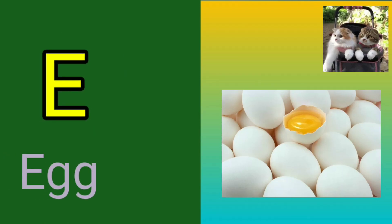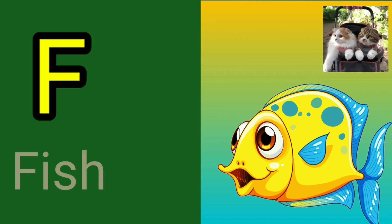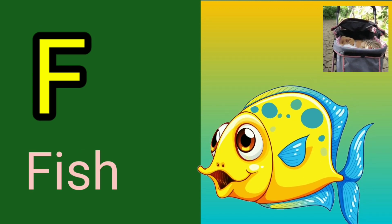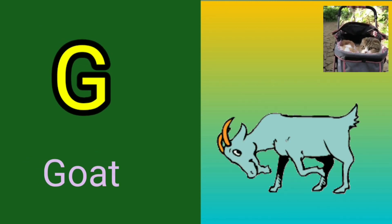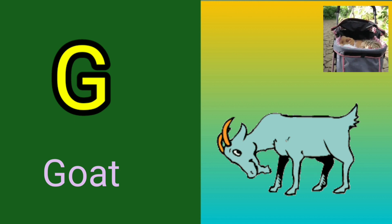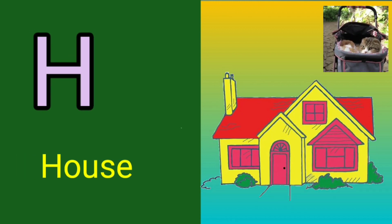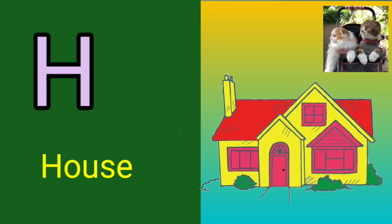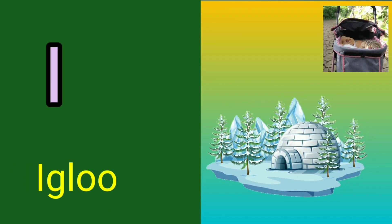E for egg, F for fish, G for goat, H for house, I for igloo.